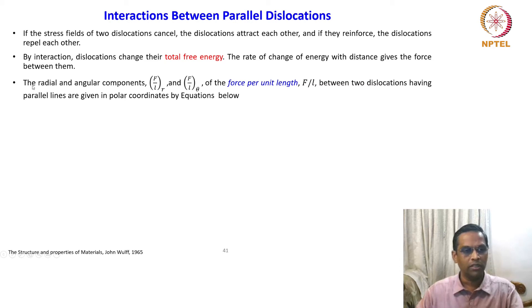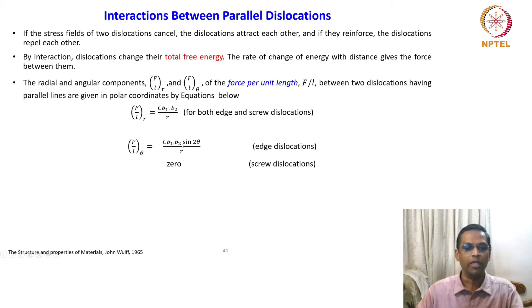If you look at the force in polar coordinates, the radial and angular components, f by l r and f by l theta, of the force per unit length between two dislocations having parallel lines are given by the equations below. f by l r equals c times b1 dot b2 by r. This is valid for both edge and screw dislocations. The angular component is given by f by l theta equals c times b1 dot b2 sin 2 theta by r. This is for edge dislocation, which is zero for screw dislocation.